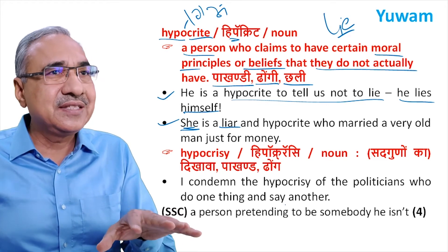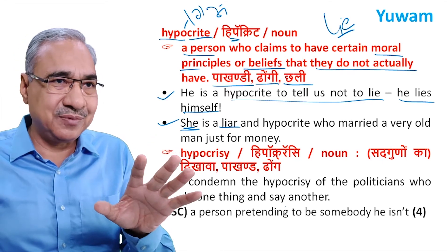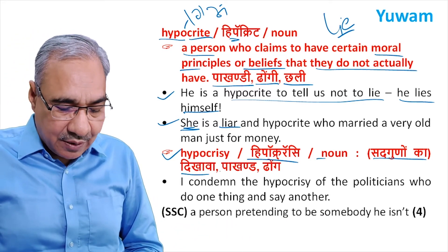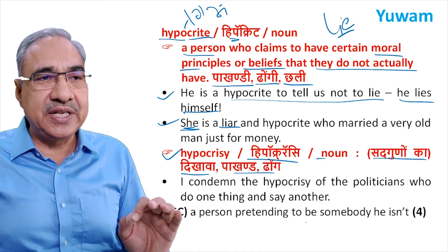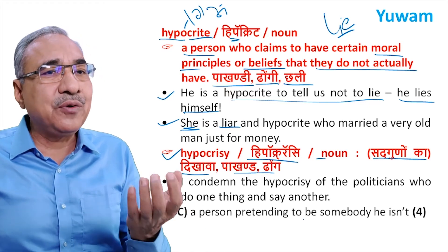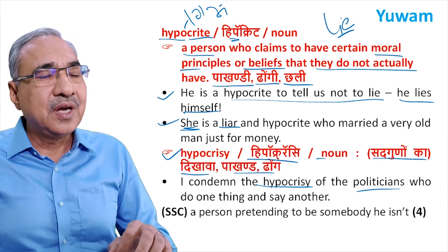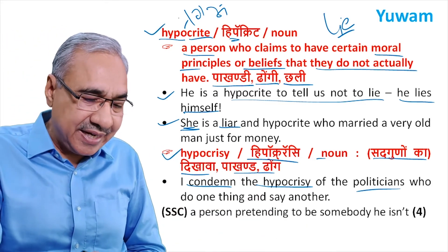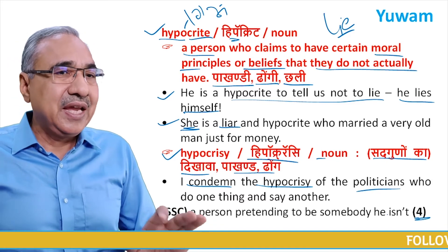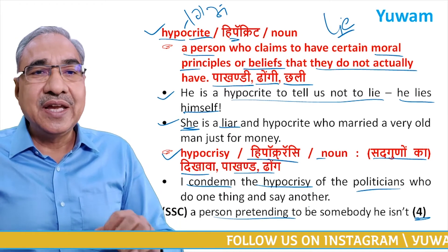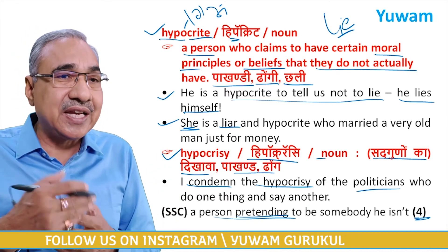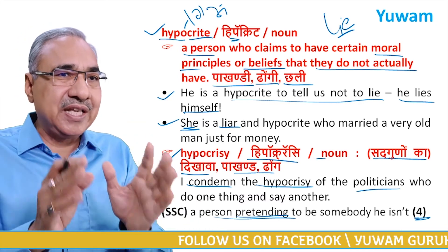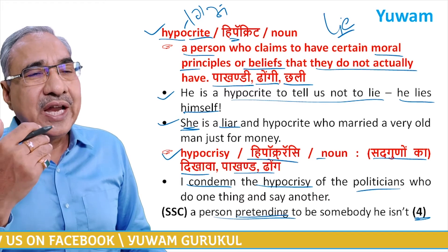She is a hypocrite — very important word. Its noun forms are 'hypocrisy' and 'hypocrisy' — both are correct. Example: 'I condemn the hypocrisy of the politicians who do one thing and say another.' A person pretending to be somebody they are not is called a hypocrite, and that behavior is called hypocrisy. This is a very important word in newspapers and advanced level writing.